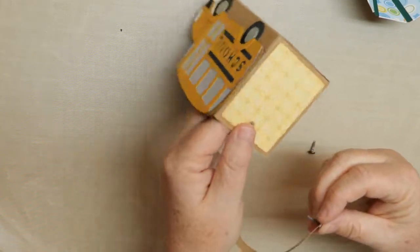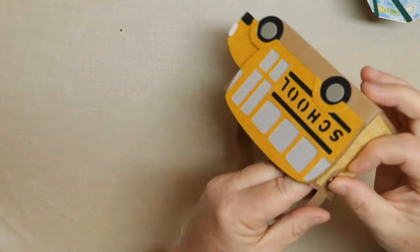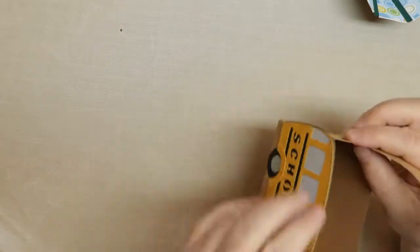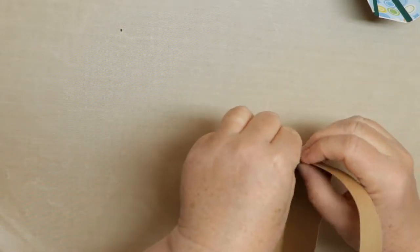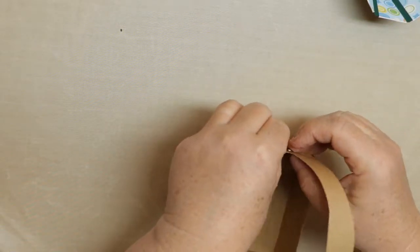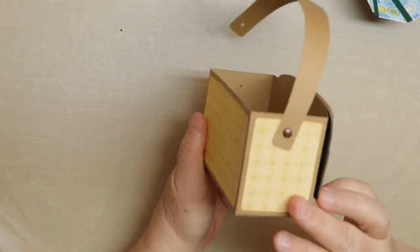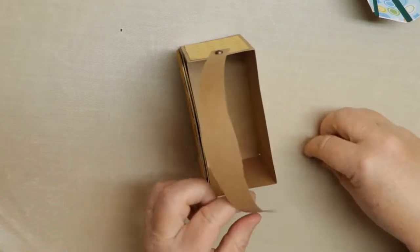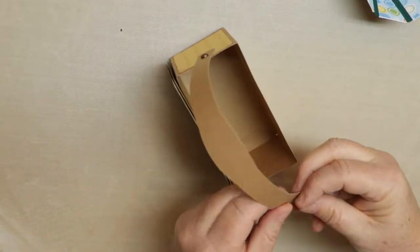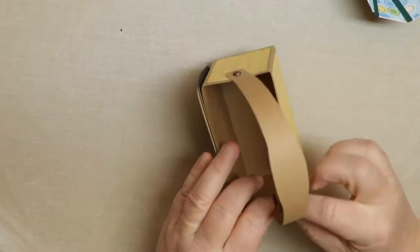You could glue it on and put like a rhinestone if you wanted to on top to hide the hole, but I think most people have brads or something like that in their possession. It just opens up like that. And then just to finish it off we put the second brad in and the box is good to go.